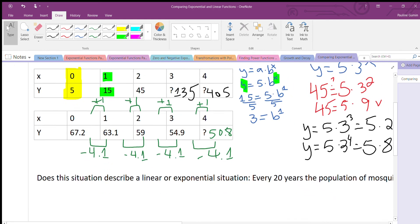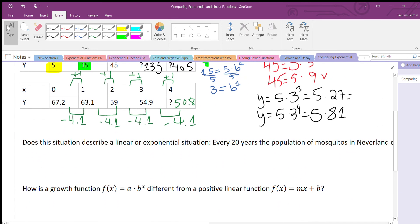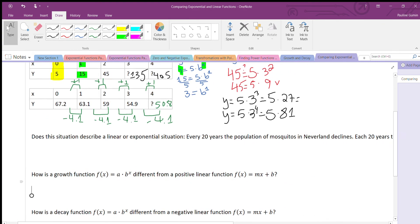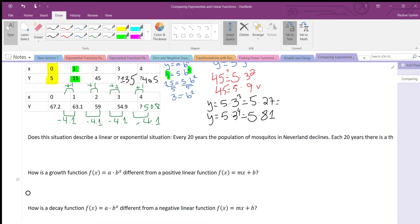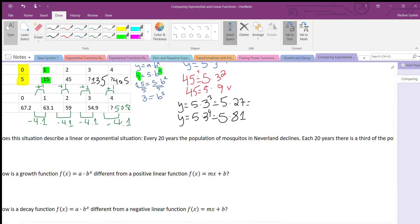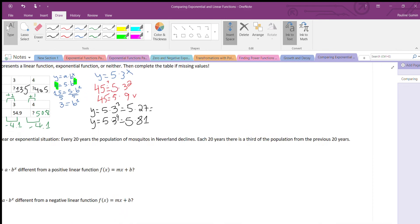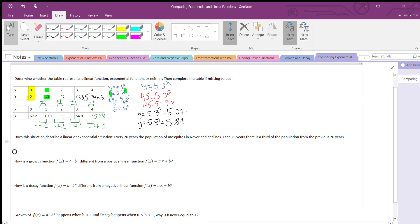Let us continue. Does this situation describe linear or exponential situation? I wrote situation twice. Every 20 years, the population of mosquitoes in Neverland declines. Lucky Neverland. Each 20 years, there is a third of the population from the previous 20 years. So is this linear or exponential? Now, what words give it away for me are going to be, not every, it's going to be a third. This is what gives it away, a third.